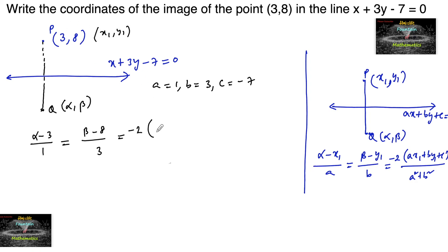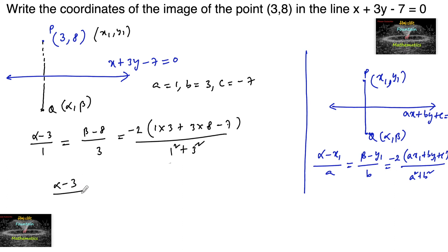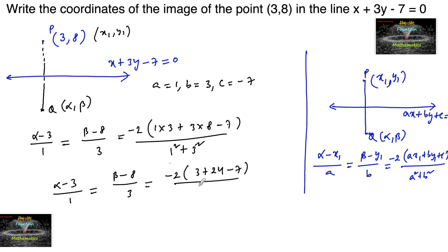Substituting: 1 times 3 plus 3 times 8 plus c (minus 7) upon a squared plus b squared. Simplifying: alpha minus 3 upon 1 equals beta minus 8 upon 3 equals minus 2 times (3 plus 24 minus 7) upon (1 plus 9). That gives minus 2 times 20 upon 10, which is minus 4.